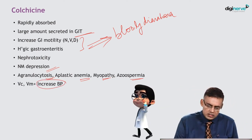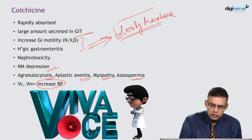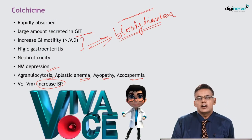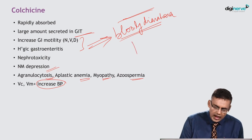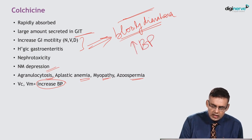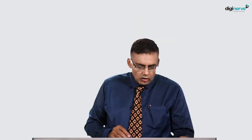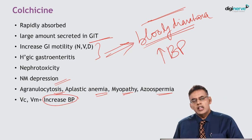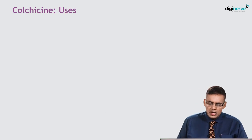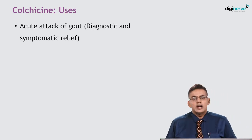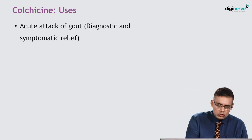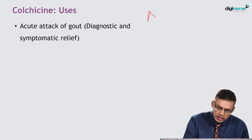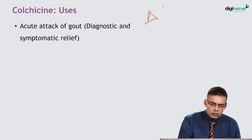When using colchicine, be careful — it is notorious for bloody diarrhea and can increase blood pressure. It causes serious effects like agranulocytosis, aplastic anemia, myopathy, and azoospermia. Colchicine is used in patients having an acute attack of gout. If use of colchicine abolishes the pain, it is diagnostic for gout.